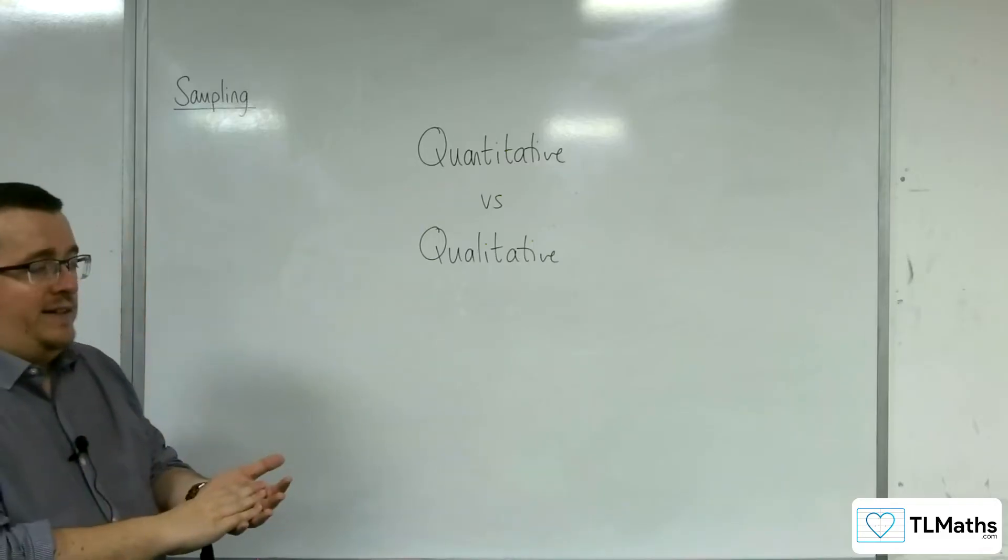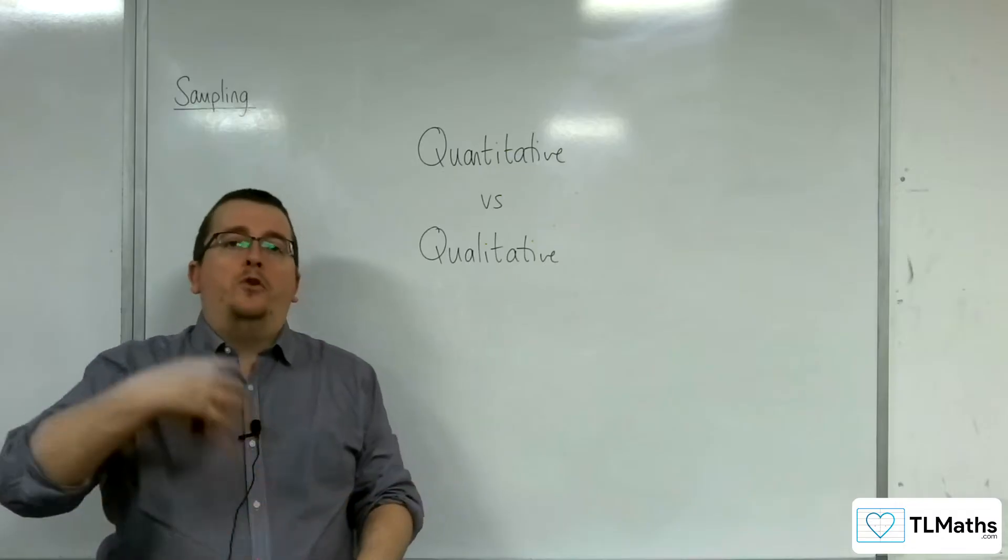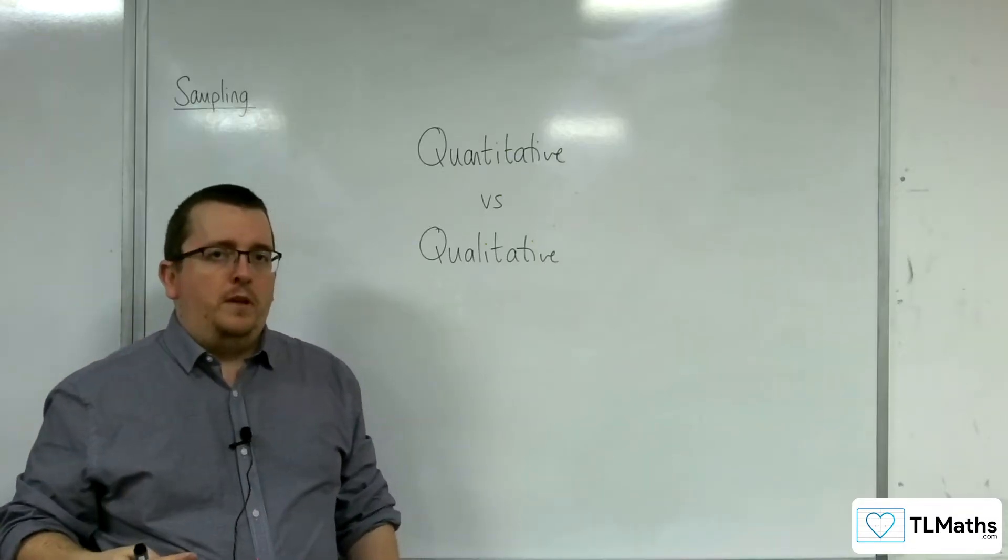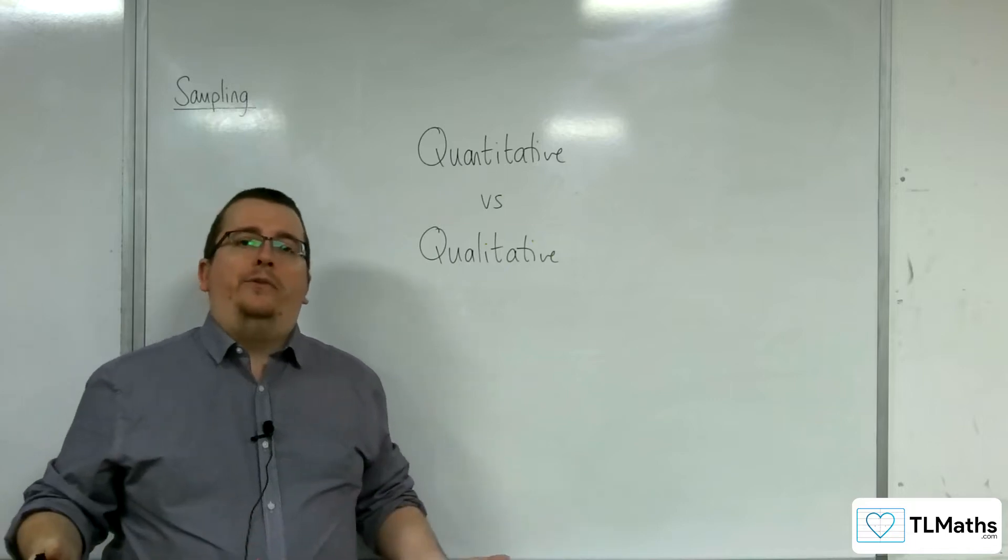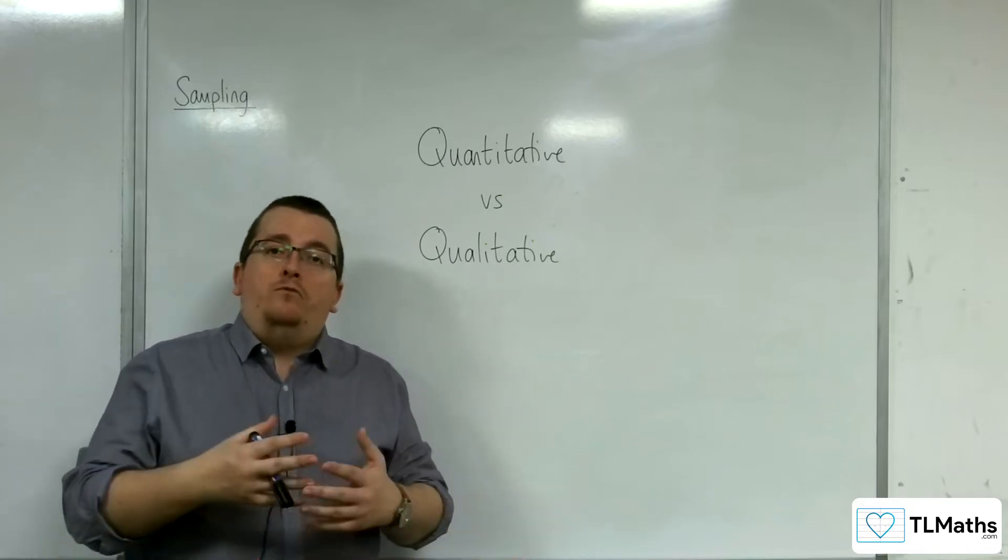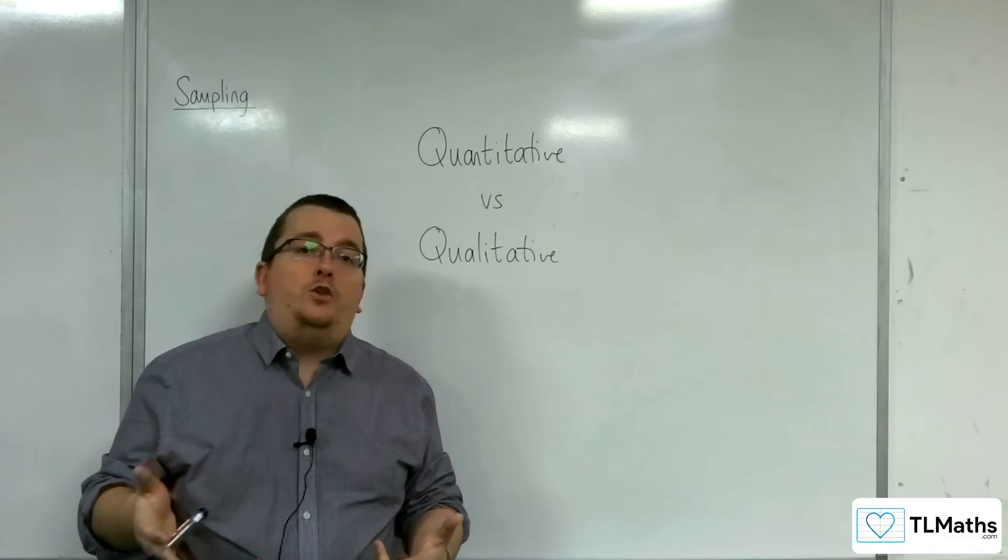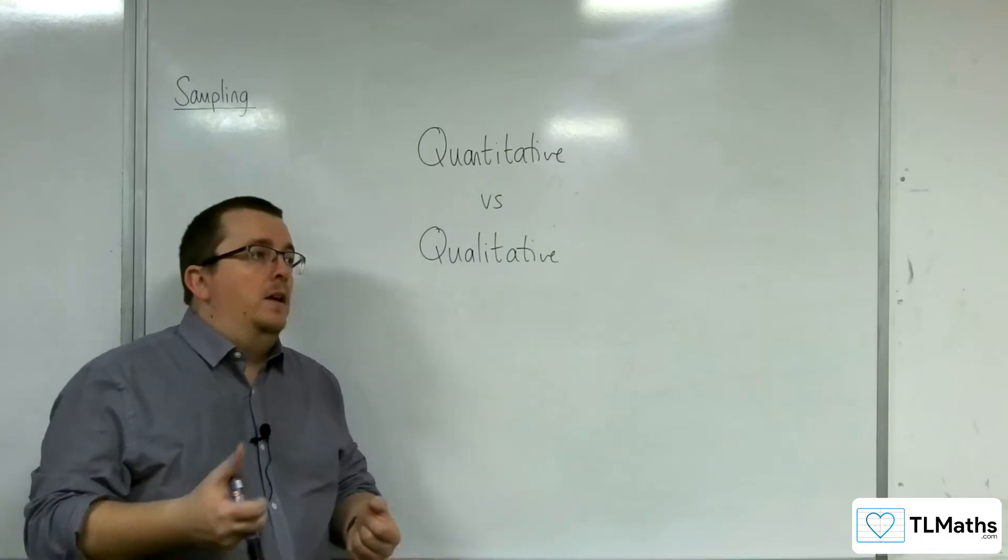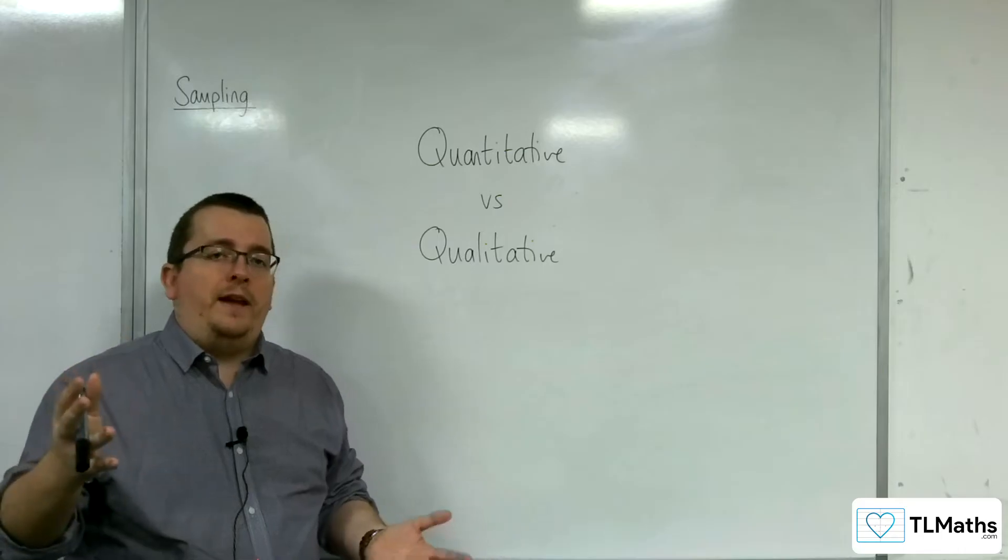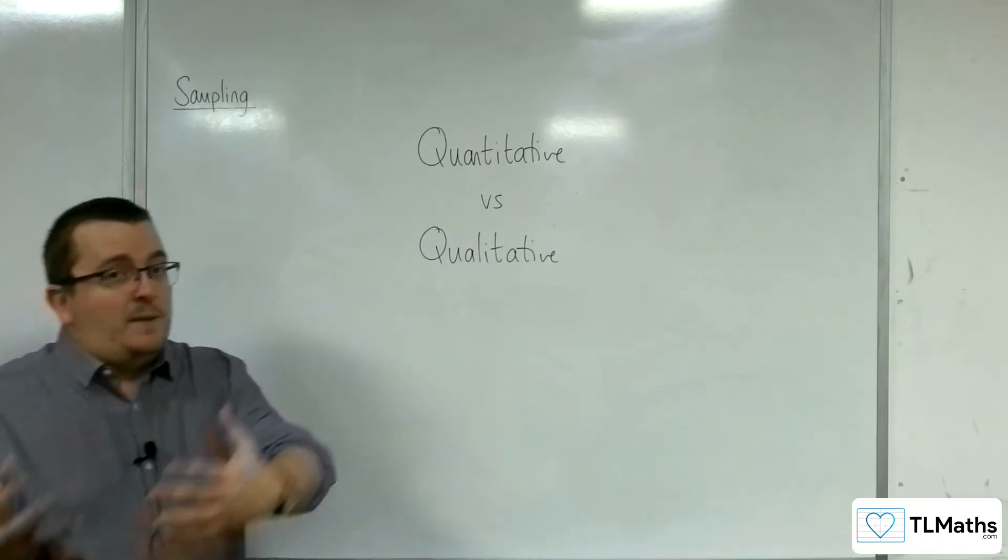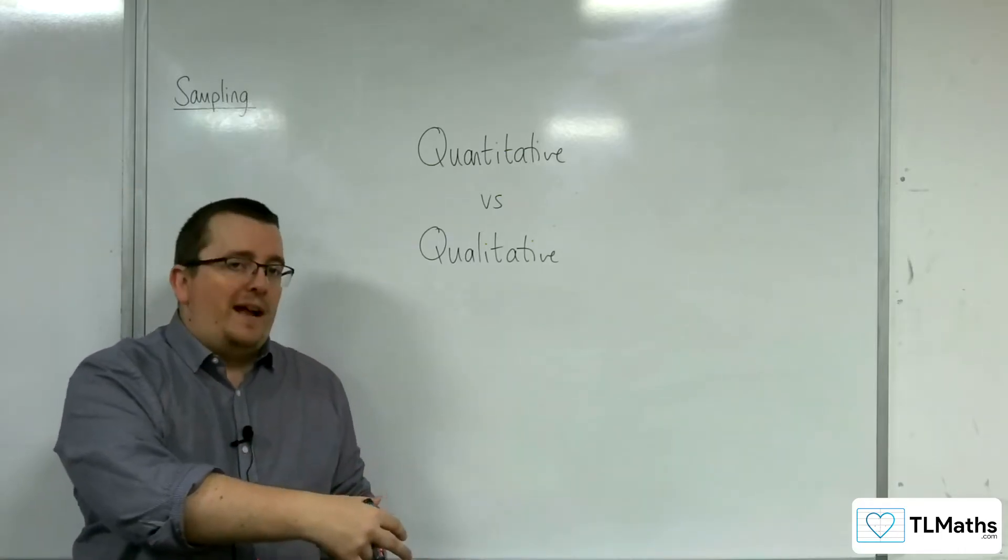If we're talking about a quantitative bit of data, then we're talking about something that is numerical. So, it might be, for example, the number of hours that you do on homework each week. So, it might be two hours, or three hours, or 3.5 hours. And so, what we're expecting back is a number, a value.